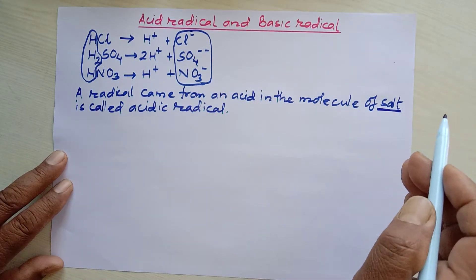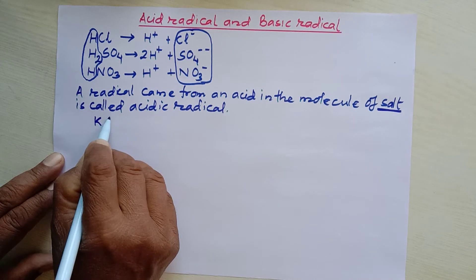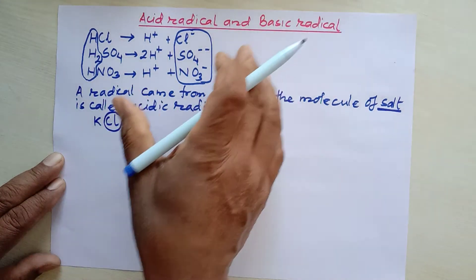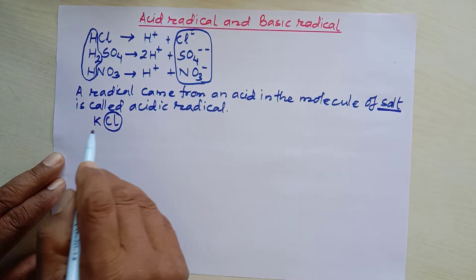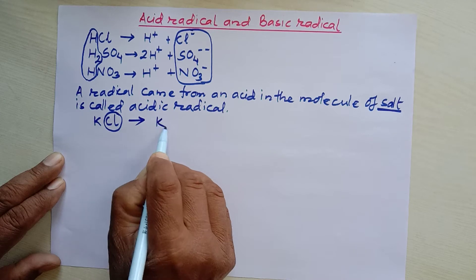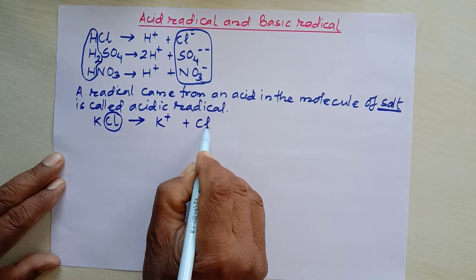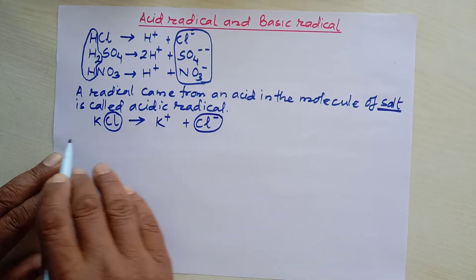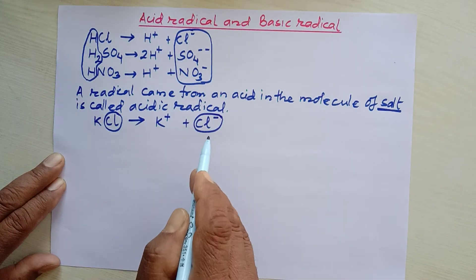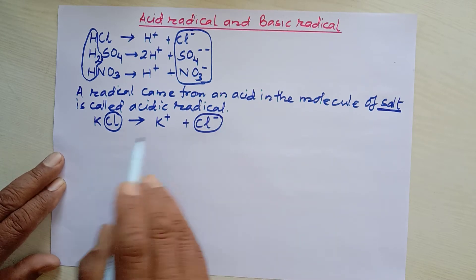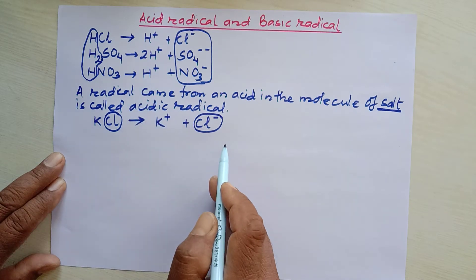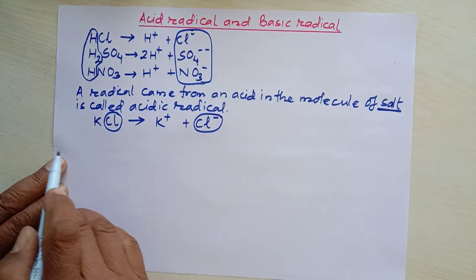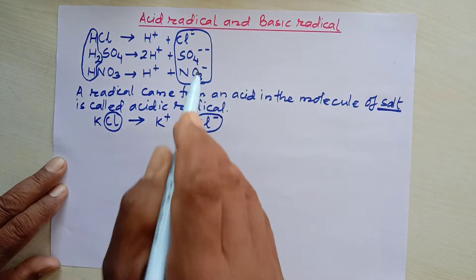The acid radical is defined in terms of salt. For example, potassium chloride is a salt, and in it, chlorine comes from the acid. When potassium chloride ionizes, it produces potassium ion and chloride ion. This chloride radical came from hydrochloric acid, and that's why it is called an acid radical.